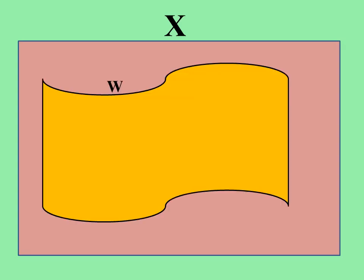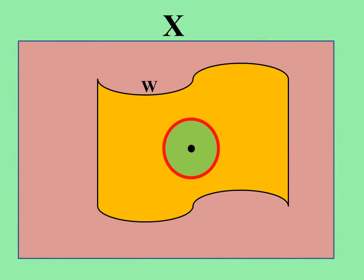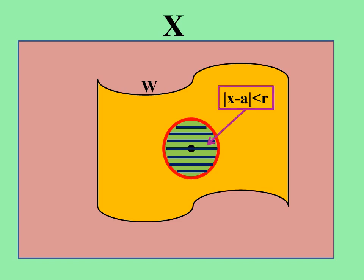Let us consider a metric space CX. Let W be a subset of the metric space CX. Let us consider a point A in the subset W. Draw a ball B with center A and radius R. The ball around point A is said to be an open ball, since it satisfies the condition that the distance between any point B in X and the center A in W is less than the radius R. The open ball B is contained in W. The subset W is said to be open, since for every point A belonging to W, we have an open ball centered at A that is contained in W. Thus, for any point A belonging to space CX, an open set that contains point A is called the neighborhood of that point A.